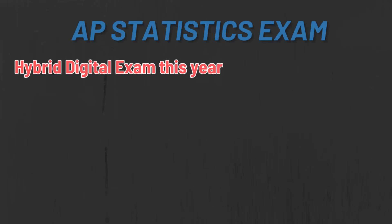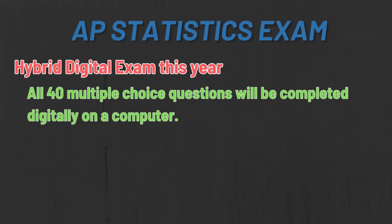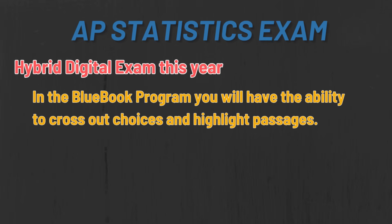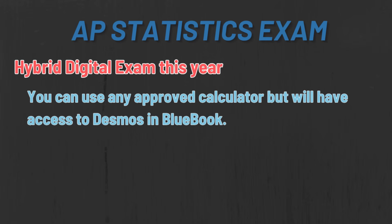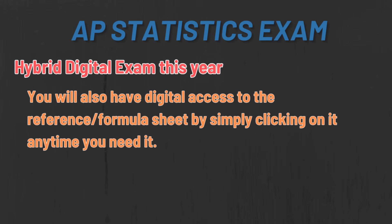This year, the AP statistics exam will be hybrid digital — you will be performing the tests on a computer through the Blue Book system. All 40 multiple choice questions will be completed digitally: you'll read the questions on screen and select A, B, C, D, or E on screen as well. In the Blue Book program, you'll have the ability to cross out choices and highlight passages. You're still allowed to use any approved calculator — the TI-84 and the Numerx calculator are most used — but you'll also have access to Desmos in the Blue Book system. You'll also have digital access to the reference formula sheet by clicking on it at any time; you will not get a paper copy, but there will be a button to view it whenever you need it.